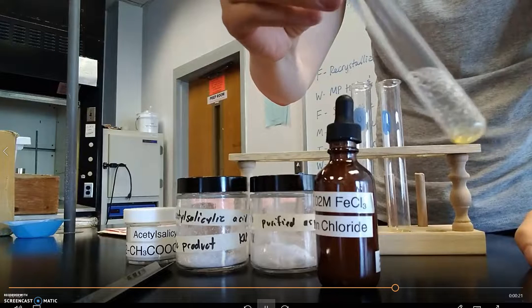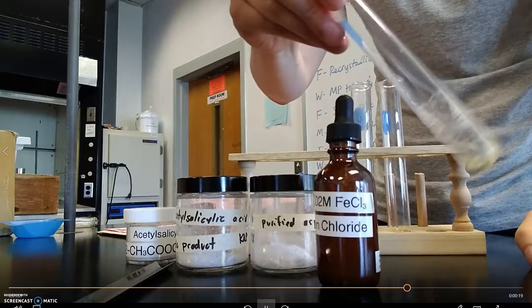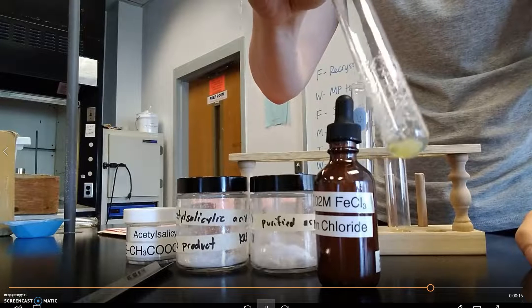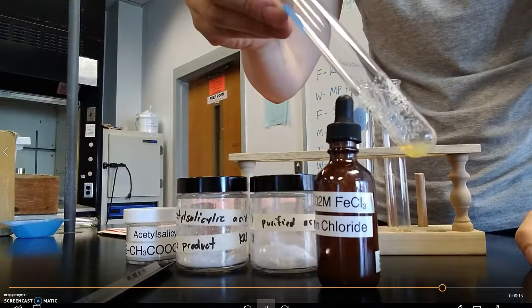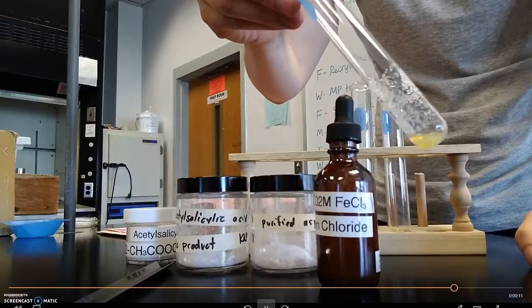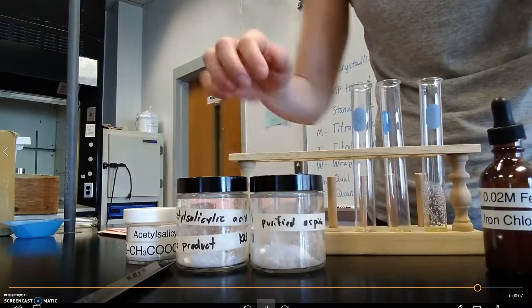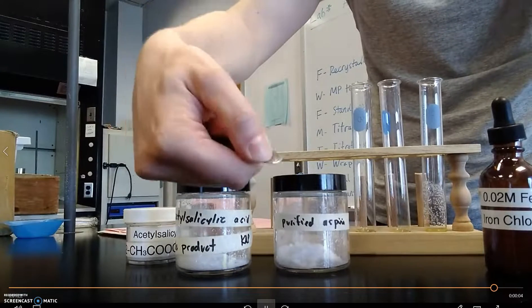Kind of like that orangish color. We're going to add that to our product. Swirl it around a little bit to try to get it to dissolve and you can see that it did not really change color in the presence of the reagent grade acetylsalicylic acid. That means that you've got a really clean sample. There aren't any impurities present.